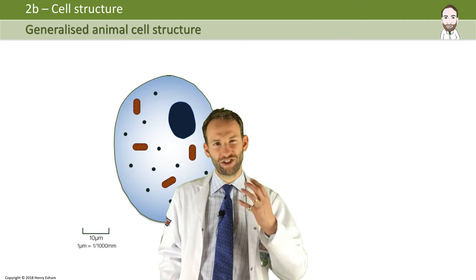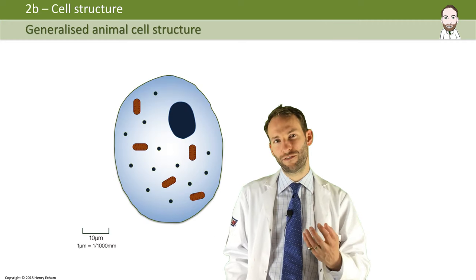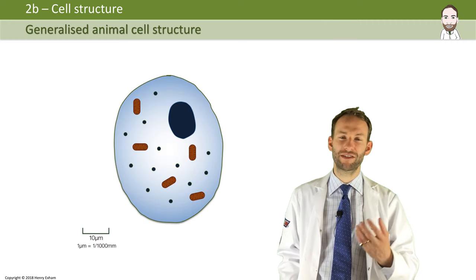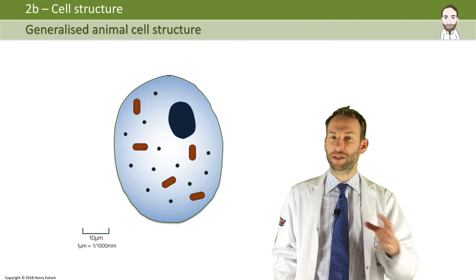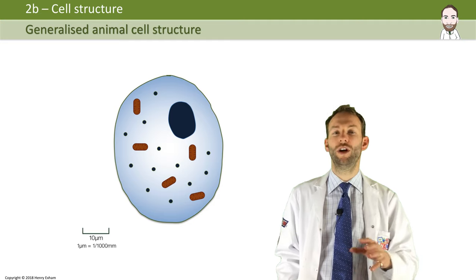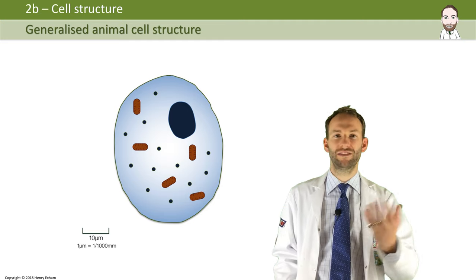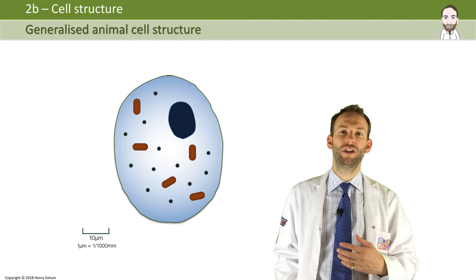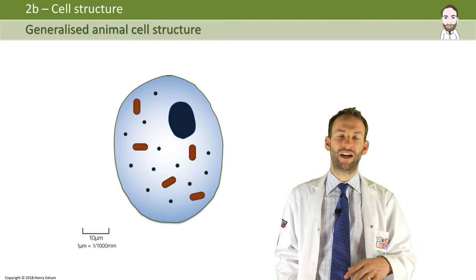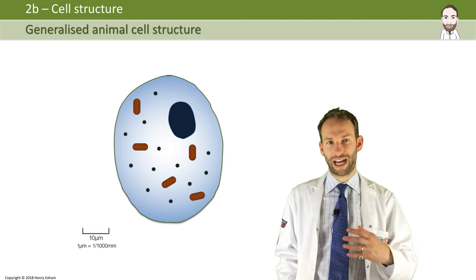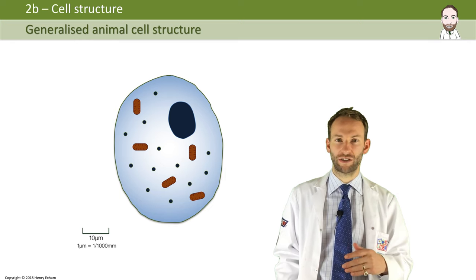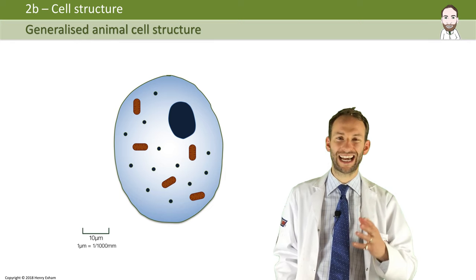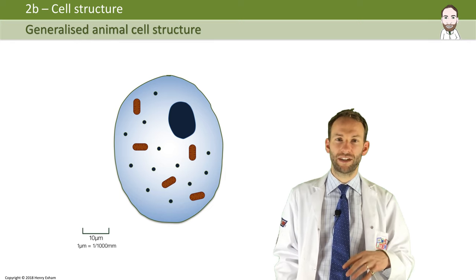So if we look at what we call a generalised cell first — most cells are specialised to do a job, but we just pick a kind of general type of cell and look at that rather than going into the specialised cells first. And this is an animal cell.